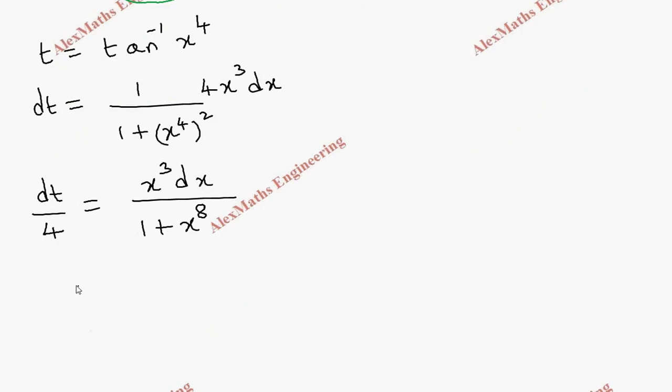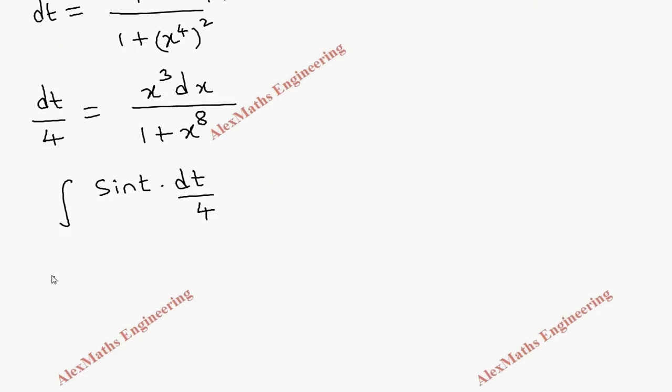If we write everything in terms of t, we have sine t into dt by 4. And this 1 by 4 can be taken out. We have integration of sine t dt.